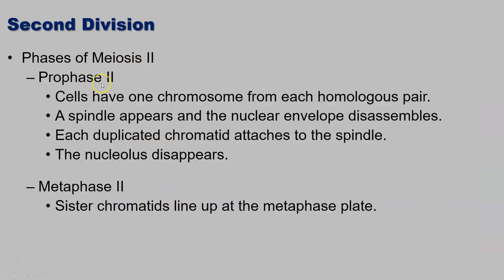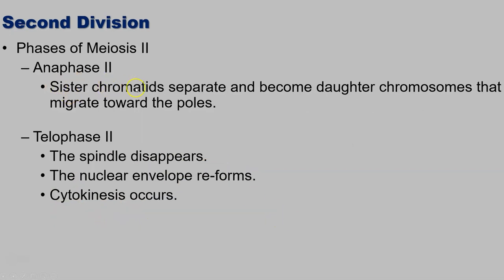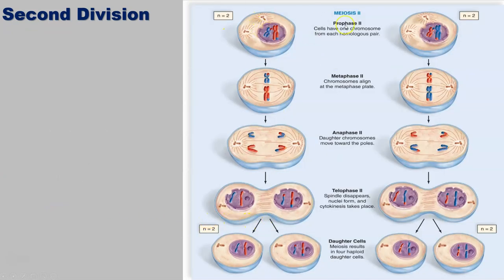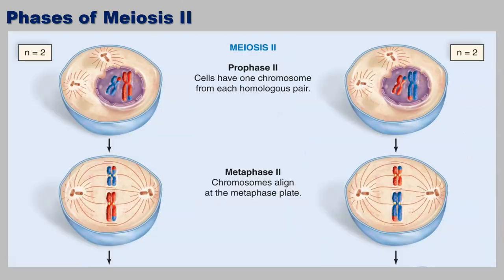Meiosis II is very similar to mitosis. The cells have one chromosome from each homologous pair. The spindle fiber reappears and the nuclear envelope disassembles again. Each duplicated chromatid attaches to the spindle fiber and the nucleolus disappears. In metaphase II, the sister chromatids line up at the metaphase plate. During anaphase II, the sister chromatids separate and become daughter chromosomes that migrate toward the poles. During telophase II, the spindle fiber disappears, the nuclear envelope reforms, and cytokinesis occurs. This looks very similar to mitosis, but what's happening here is we're working with haploid cells, whereas in mitosis we're working with diploid cells.